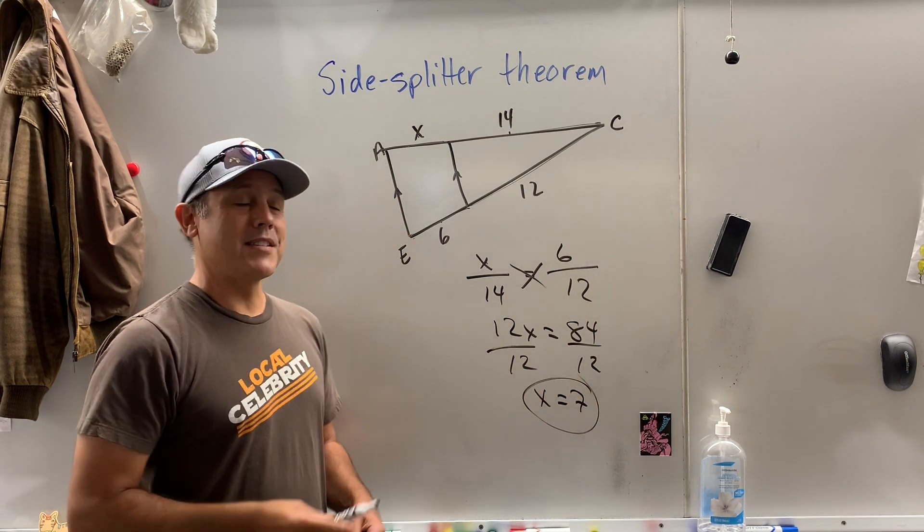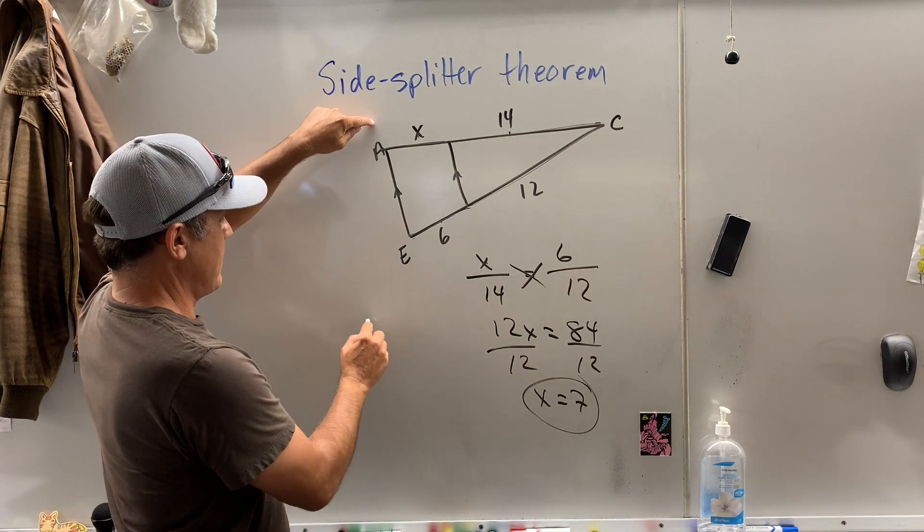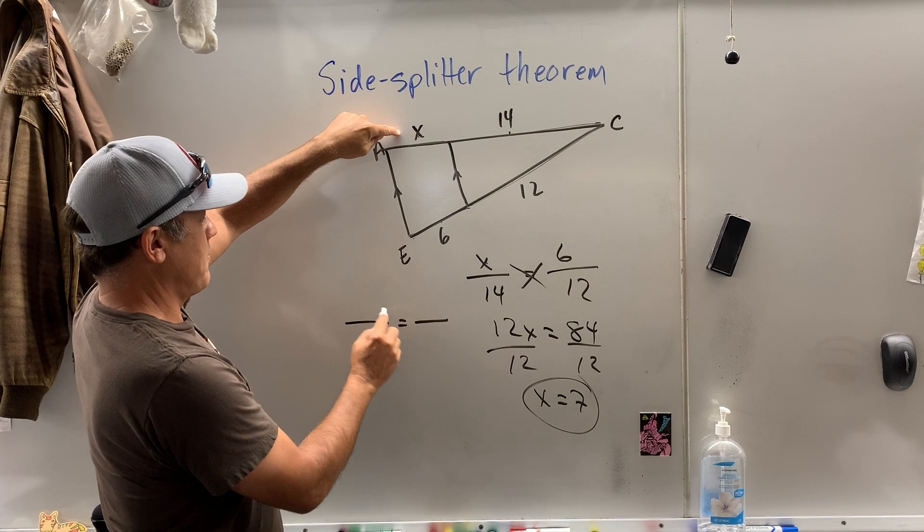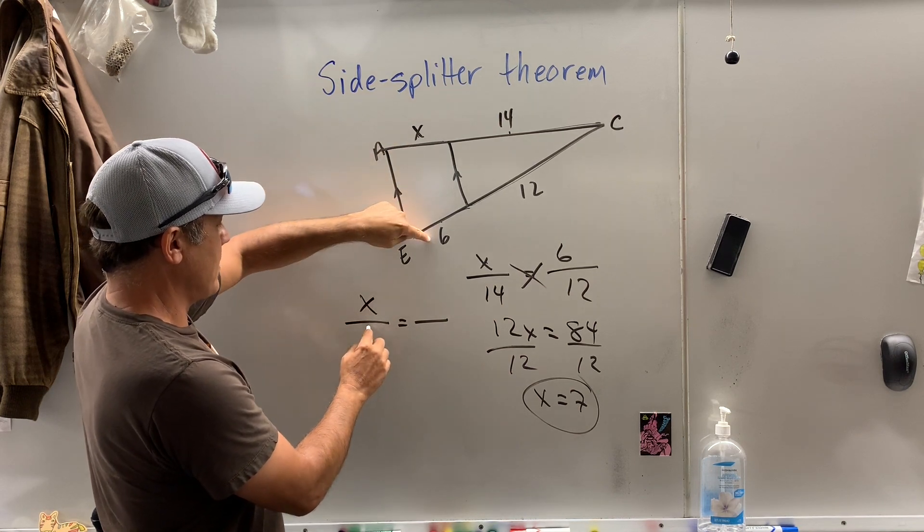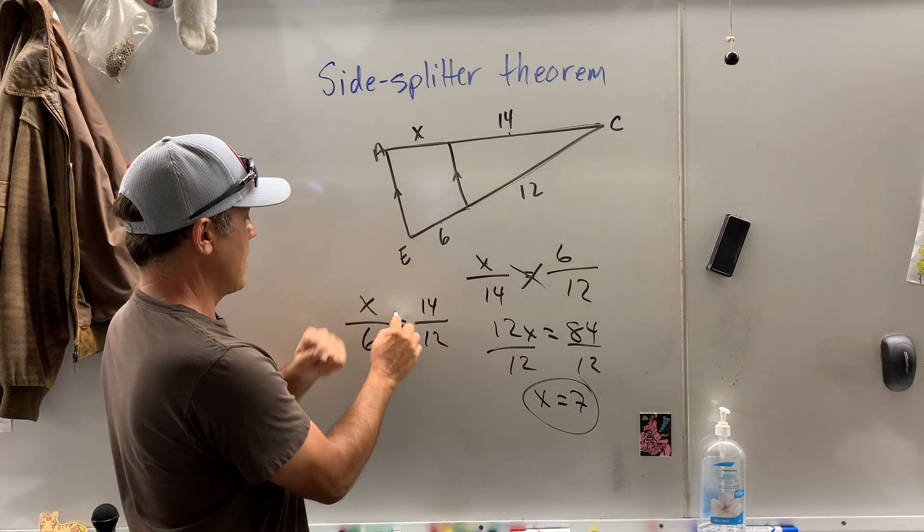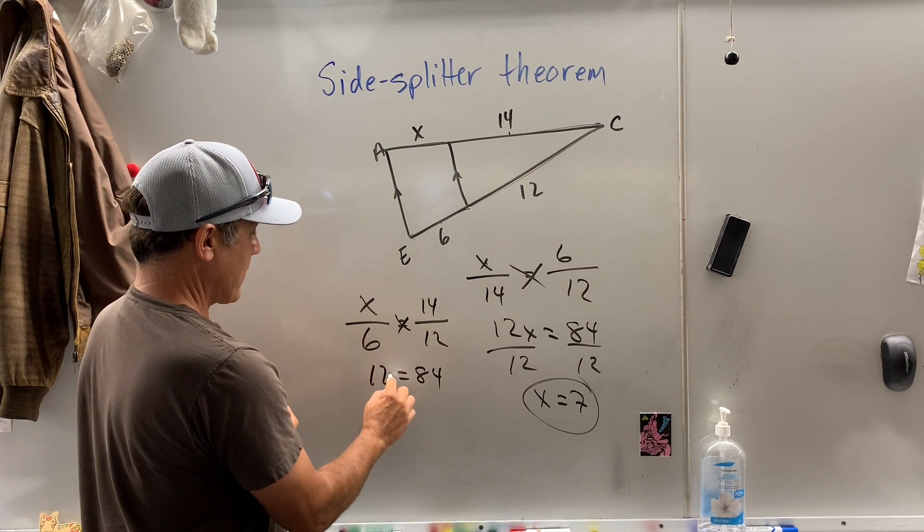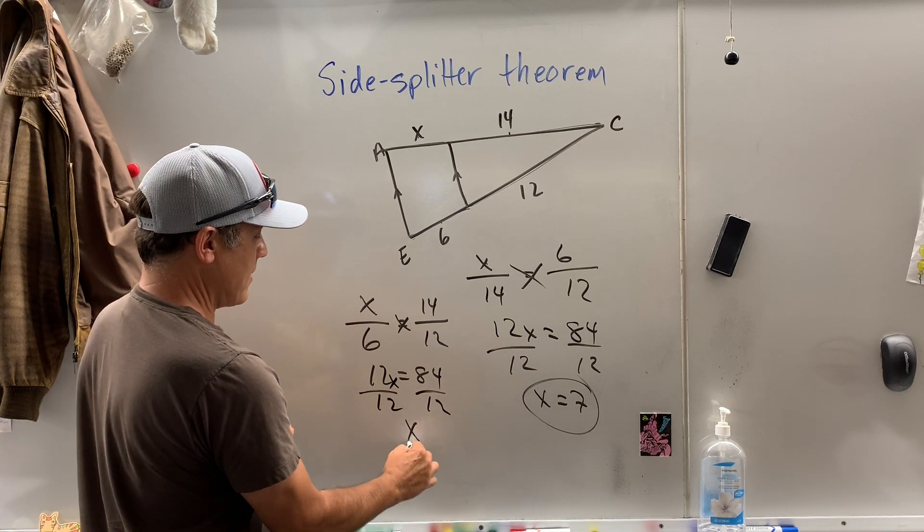That, my friends, is the side splitter theorem. I wonder if you could have done something else. I wonder if we could have done another proportion. Maybe this side is to this side as this side is to this side. Well, sure enough, you will get the same answer.